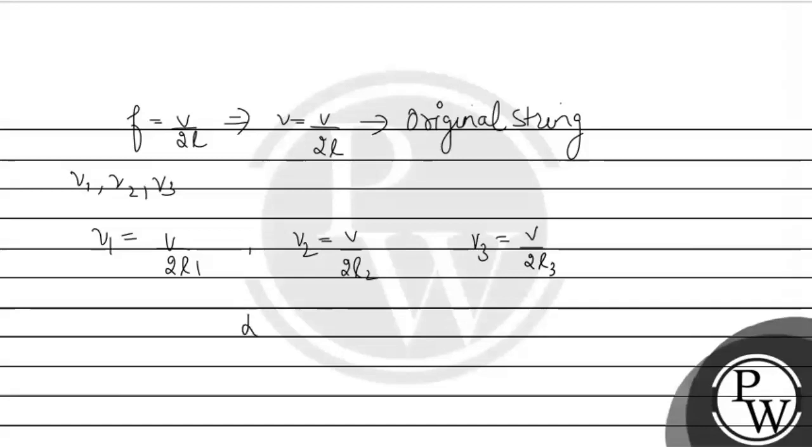Now we have to look at the total length: L equals L1 plus L2 plus L3. And we know that if we look at L1, then L1 will be equal to V over 2ν1. Similarly, L2 will be V over 2ν2, and L3 will be V over 2ν3.